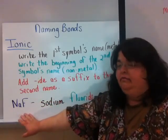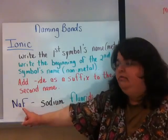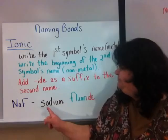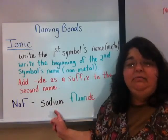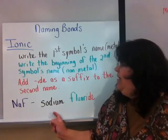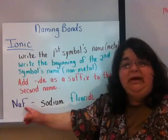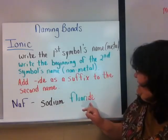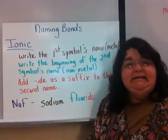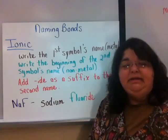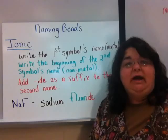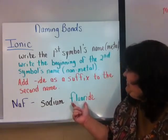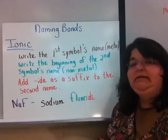So if you look at NaF, we know this is ionic because we have a metal with a non-metal. The first name is sodium — we simply rewrite the name of the first symbol. Then we take the beginning of the word fluorine, 'fluor,' and add '-ide' to the end as a suffix. It takes some practice knowing where to stop the non-metal's name. Nitrogen becomes nitride, oxygen becomes oxide. The idea is you take the first syllable and drop the end to add '-ide.'